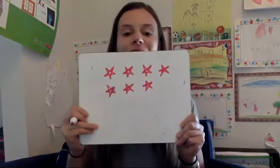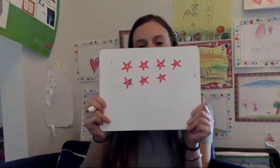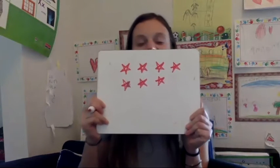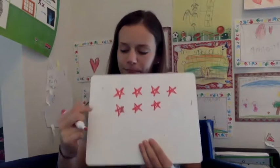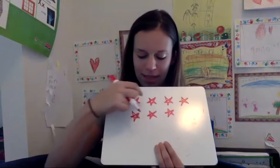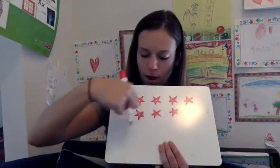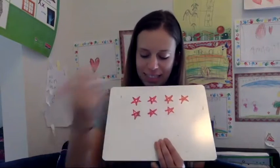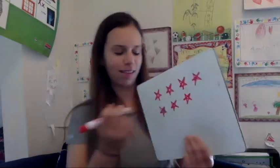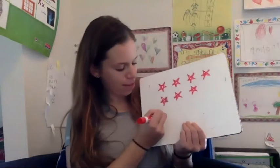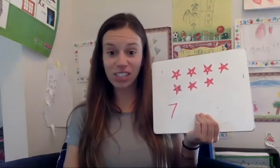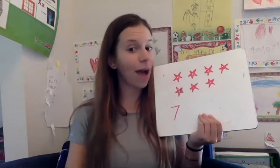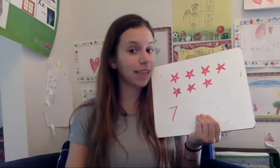How many stars are there? Let's count them — one, two, three, four, five, six, seven. I have seven stars to start. Now I'm going to erase them.